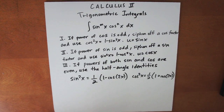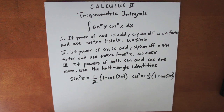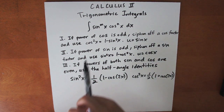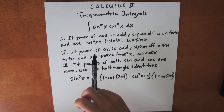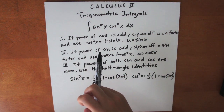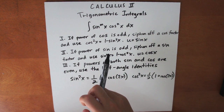Hello, today we are going to talk about how to evaluate trig integrals. The first form of trig integrals we're going to talk about is the form of sine to the nth power and cosine to the nth power.